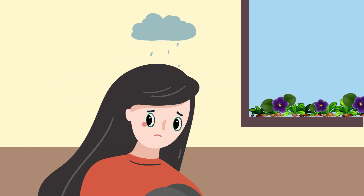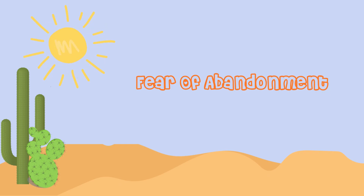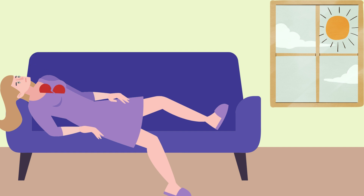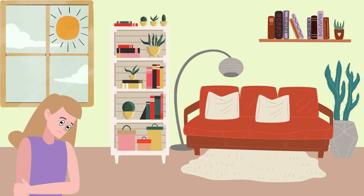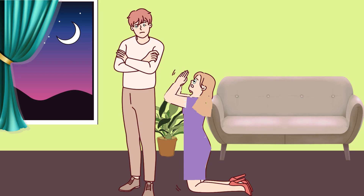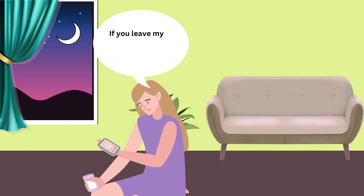There are 9 criteria of BPD. The first is Fear of Abandonment. People with BPD fear rejection and abandonment because they don't want to be alone. They make frantic efforts to avoid real or imagined abandonment. The thought of losing their loved one can be a source of stress and can lead to profound changes in affect, cognitions, and self-image. Their frantic efforts to avoid abandonment may include impulsive actions such as self-mutilating or suicidal behaviors.